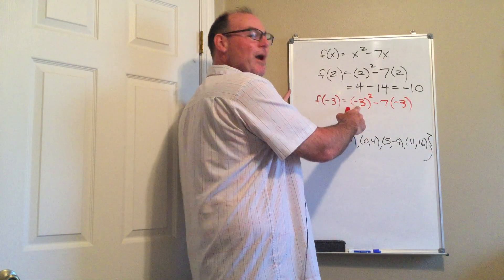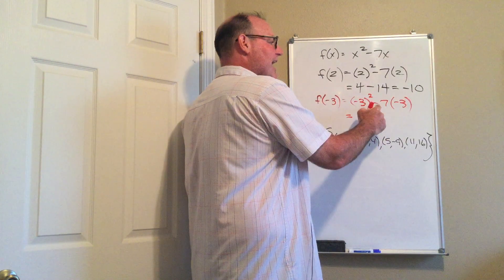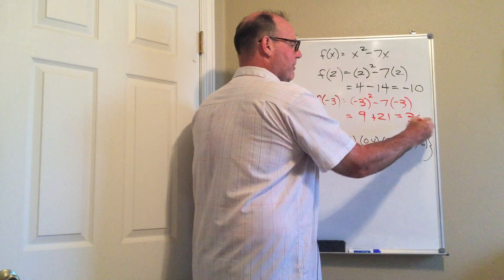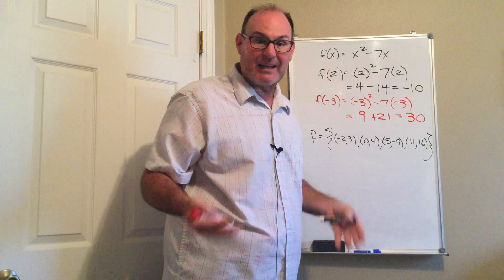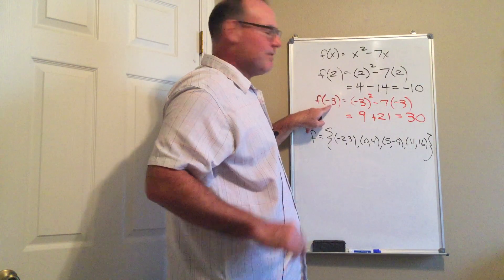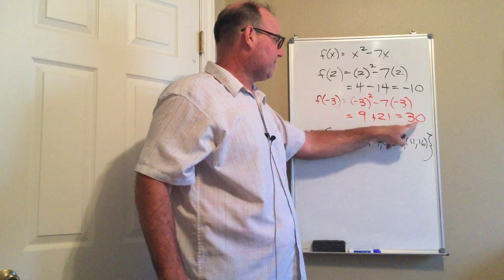Negative 3 squared, negative 3 times a negative 3 is positive 9, and negative 7 times negative 3 is plus 21, and you end up with 30. Be very careful of your signs. Most common mistake on function notation problems. The corresponding y value to the x value negative 3 is 30.